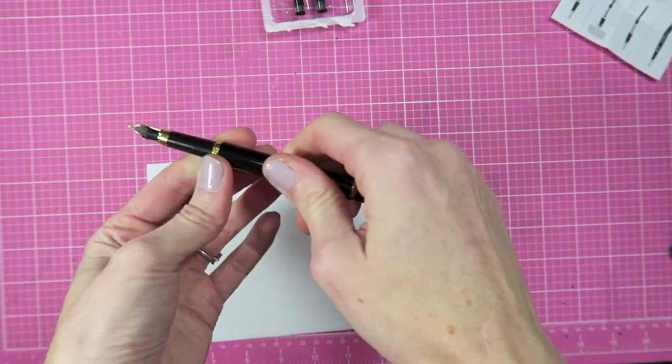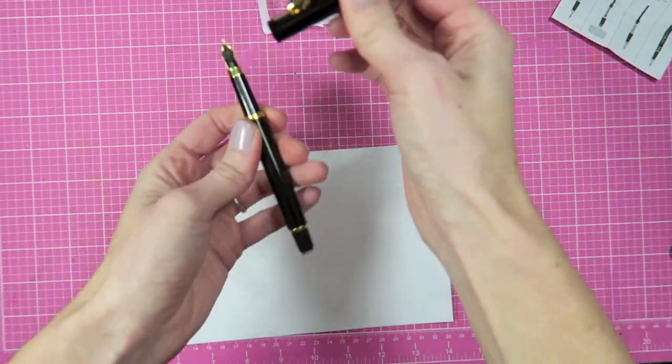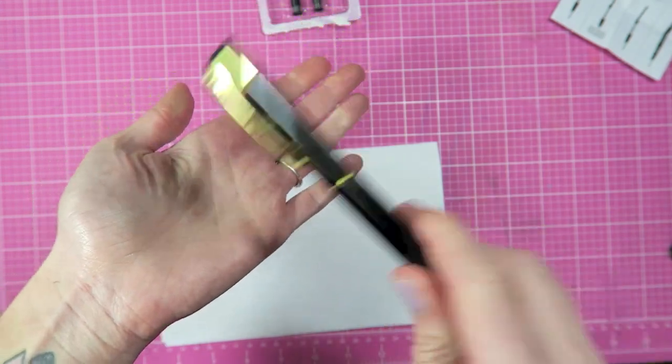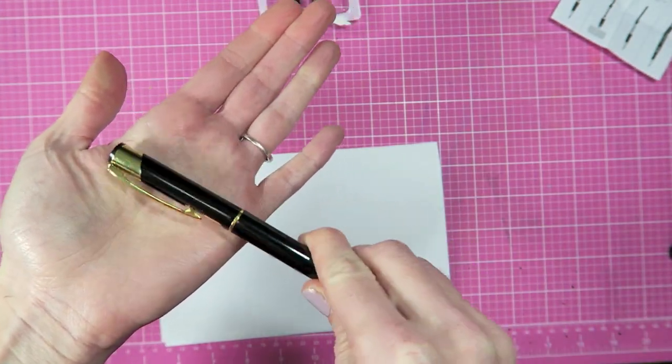And then the trick here is that you need to tap the pin on your hand or on a table quite a bit to get the ink flowing like you see here.